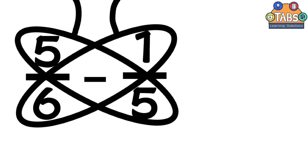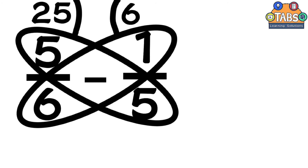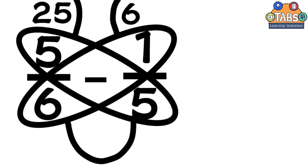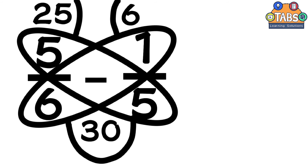Then multiply the numbers in each wing and write the answer under the antenna: 5 times 5 equals 25, and 6 times 1 equals 6. Then multiply the two denominators to get the denominator of the result: 5 times 6 equals 30.